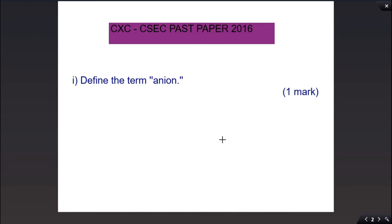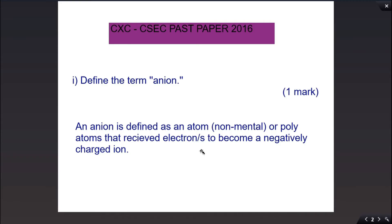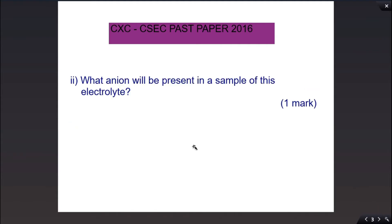The first question says define the term anion. An anion is defined as an atom or polyatom that received electron or electrons to become a negatively charged ion. Part two says what anion will be present in a sample of this electrolyte? The sulfate anion and the hydroxide anion, given the fact that the solution is dilute sulfuric acid.